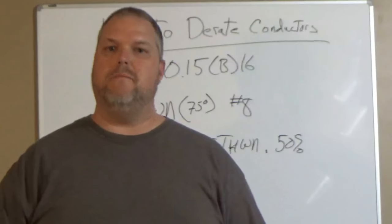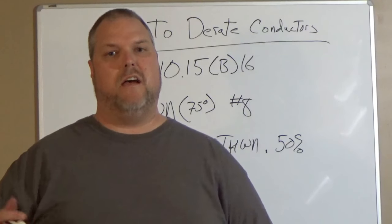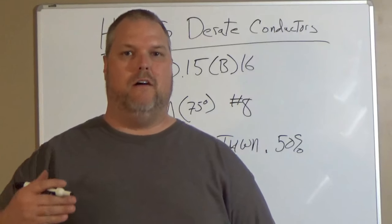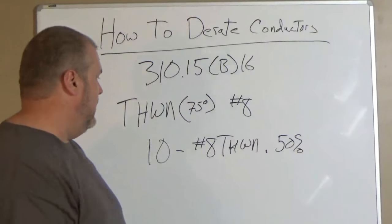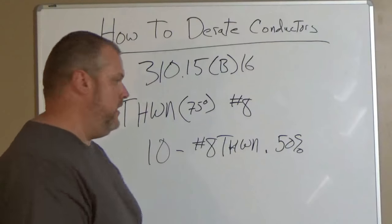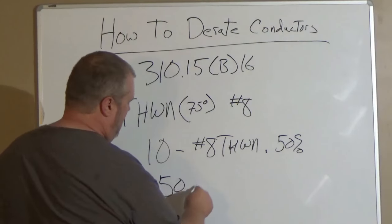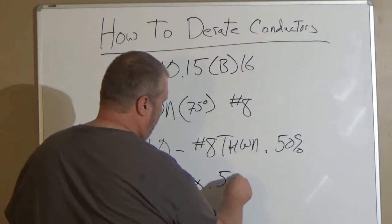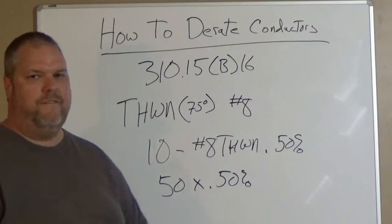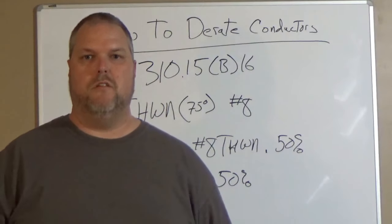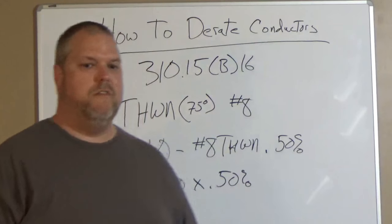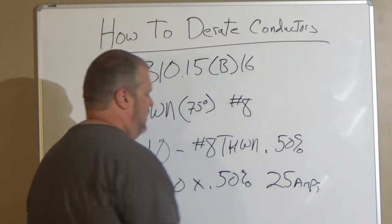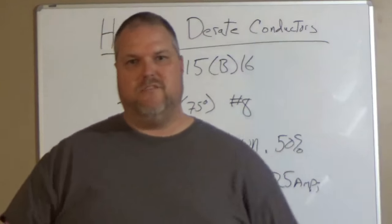Now I have to do the same thing I did for 80 percent, but because I went from four conductors to 10 conductors, that 80 percent now dropped to 50 percent. So I still take my 50, I multiply it by 0.50, and 50 times 0.50 now gives me 25 amps—it's 50 percent of it.